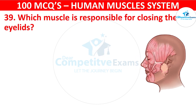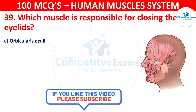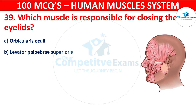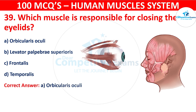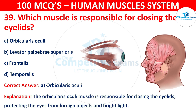Question 39. Which muscle is responsible for closing the eyelids? Your options are Orbicularis oris, Levator palpebrae superioris, Frontalis, or Temporalis. The correct answer is A, i.e. Orbicularis oris. The orbicularis oris muscle is responsible for closing the eyelids, protecting the eyes from foreign objects and bright light.